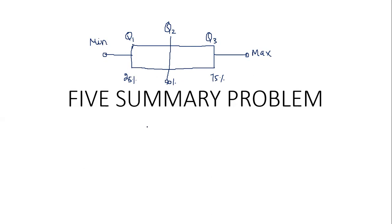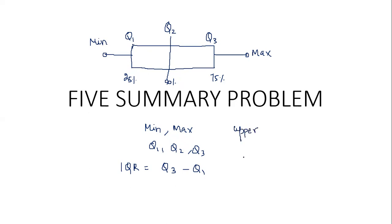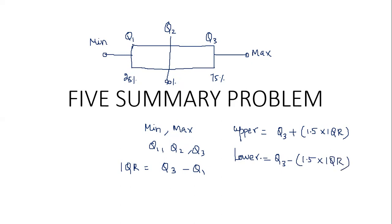In the 5-number summary problem, we are going to calculate the minimum and maximum value, then Q1, Q2, and Q3. We are also going to calculate the interquartile range, which is Q3 minus Q1. We can identify outliers by calculating the upper range — Q3 plus 1.5 times IQR — and the lower range — Q1 minus 1.5 times IQR. These are the different parameters we will calculate.